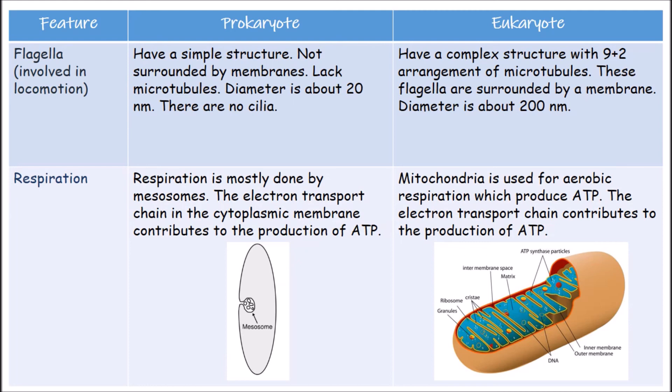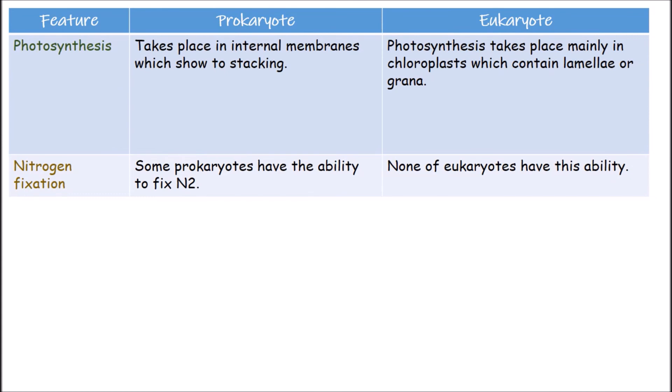Eukaryotes use mitochondria for aerobic respiration, producing ATP — the energy carrier in all living organisms. The electron transport chain is located in the inner membrane of the mitochondria. Regarding photosynthesis, in prokaryotes it takes place on internal membranes which show no stacking. In eukaryotes, photosynthesis takes place mainly in chloroplasts, which contain membranes usually stacked into lamellae or grana.